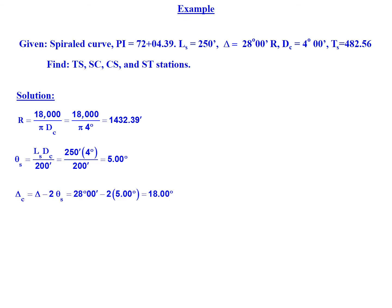We can then calculate the component of the deflection that's responsible for the circular curve portion. We take our overall deflection of 28 degrees and subtract off 2 times theta sub s to give us a delta sub c of 18 degrees.